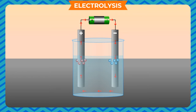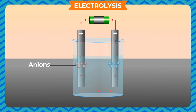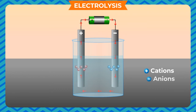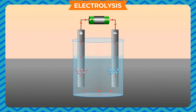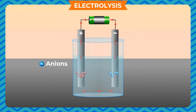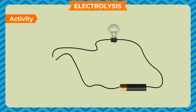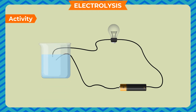When an electrolyte is dissolved in water, it breaks up into positively and negatively charged particles called ions. Positively charged ions are called cations, while negatively charged ions are called anions. During the passage of electric current through the solution, the cations move towards the negatively charged electrode and anions towards the positively charged electrode. This results in a chemical change. The two free ends of the wires of the tester are dipped in different liquids to check whether they conduct electricity or not.